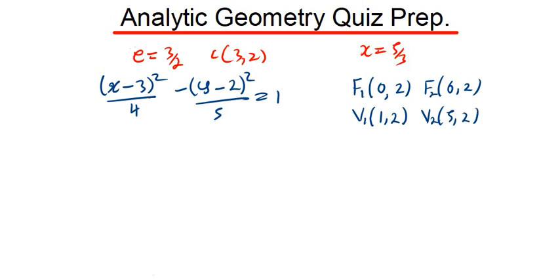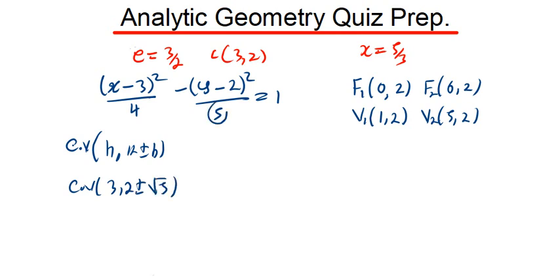For the co-vertices, they lie on the y-axis direction, with coordinates (h, k ± b). Our h is 3, k is 2, and b is the square root of 5. So co-vertex CV1 is (3, 2 minus √5), and co-vertex CV2 is (3, 2 plus √5).